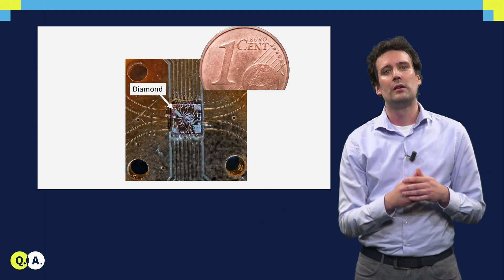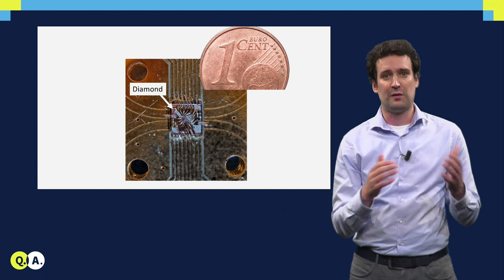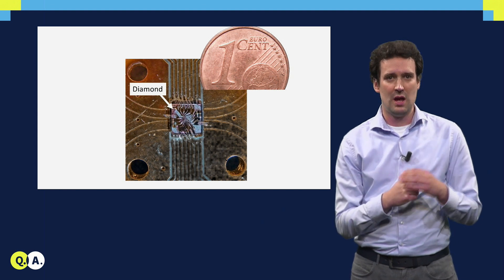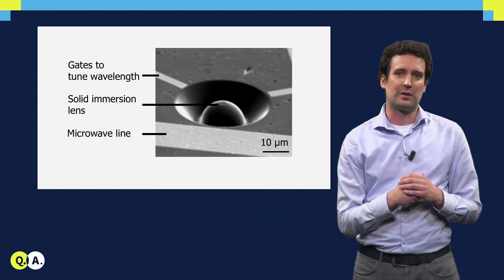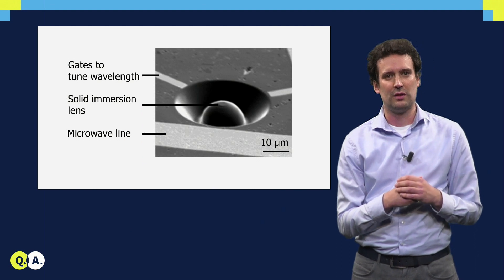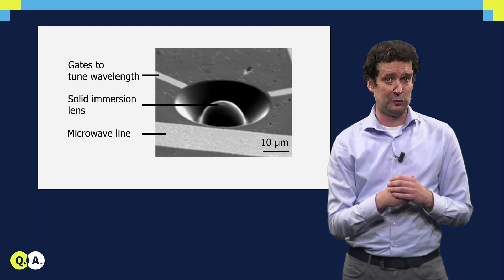And if we zoom in, you see here the diamond. It is just a few millimeters big. And if we zoom in even further with an electron microscope, you can see these structures. So the gray background here is the surface of the diamond.